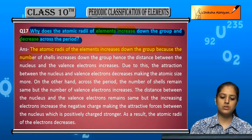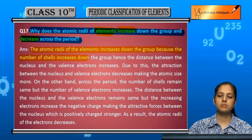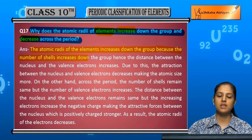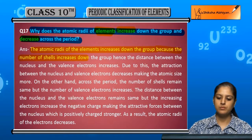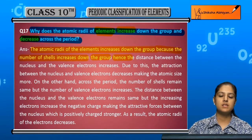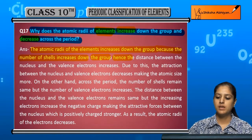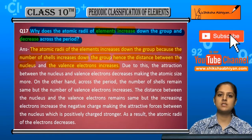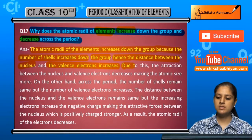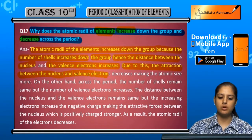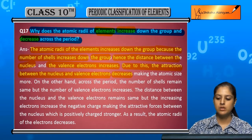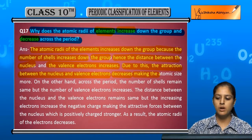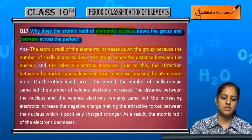Because the shells in one group are increasing — first one, second two, third three, fourth four shells increase in one group. So what happens is the valence electrons are not getting closer; the distance between the nucleus and the valence electrons increases. When the distance increases, the attraction between the nucleus and the valence electrons is reduced, so the atoms are loosely bound and the size of the atom increases.